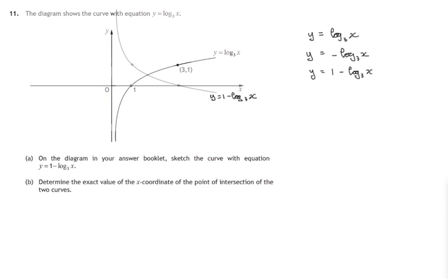Let's look at part B now. In this part, we're asked to determine the exact value of the x-coordinate of the point of intersection of these two curves. We have the curve y equals log to the base 3 of x, and also the curve y equals 1 minus log to the base 3 of x. These two formulas have to work together. We're solving them simultaneously to find the x-coordinate of this point.